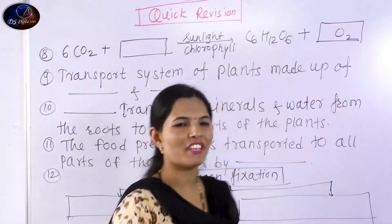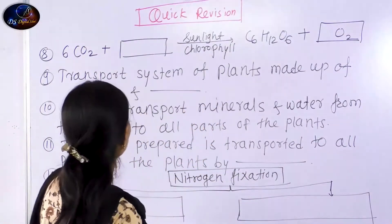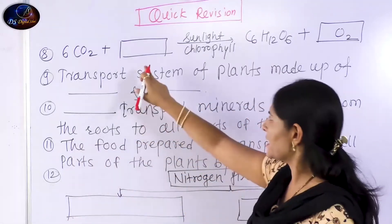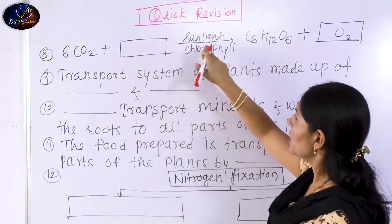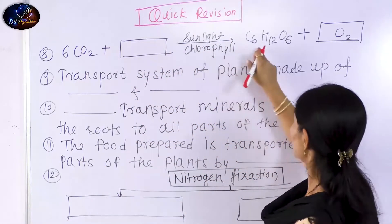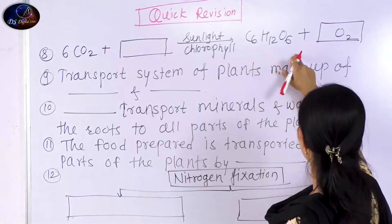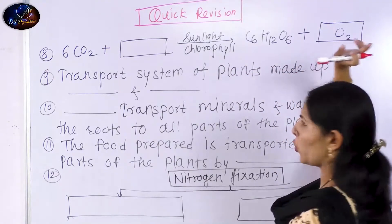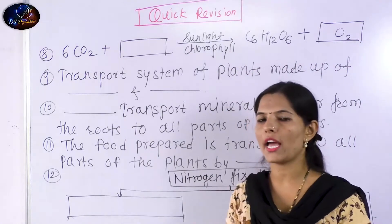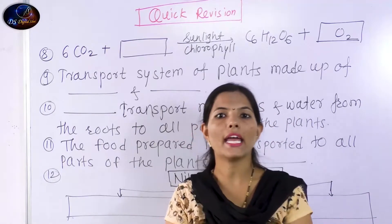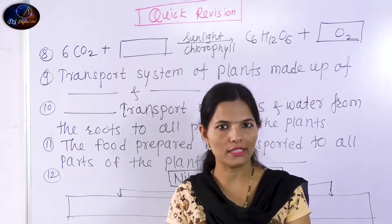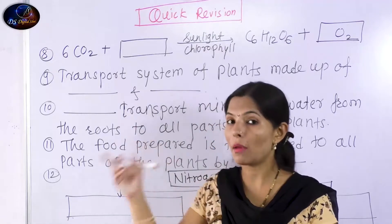Our next question is, as you can see on the board: 6CO2 plus 6H2O, with sunlight and chlorophyll, gives C6H12O6 plus O2. This is the process of photosynthesis.